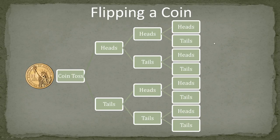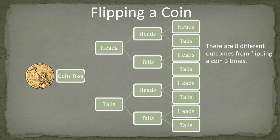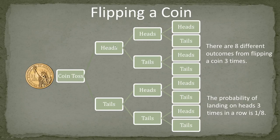So we can see there are 8 different outcomes of flipping a coin three times. This also means we can see the different events here — if we flip the coin heads, heads, heads, the probability of landing on heads three times in a row is one out of eight.